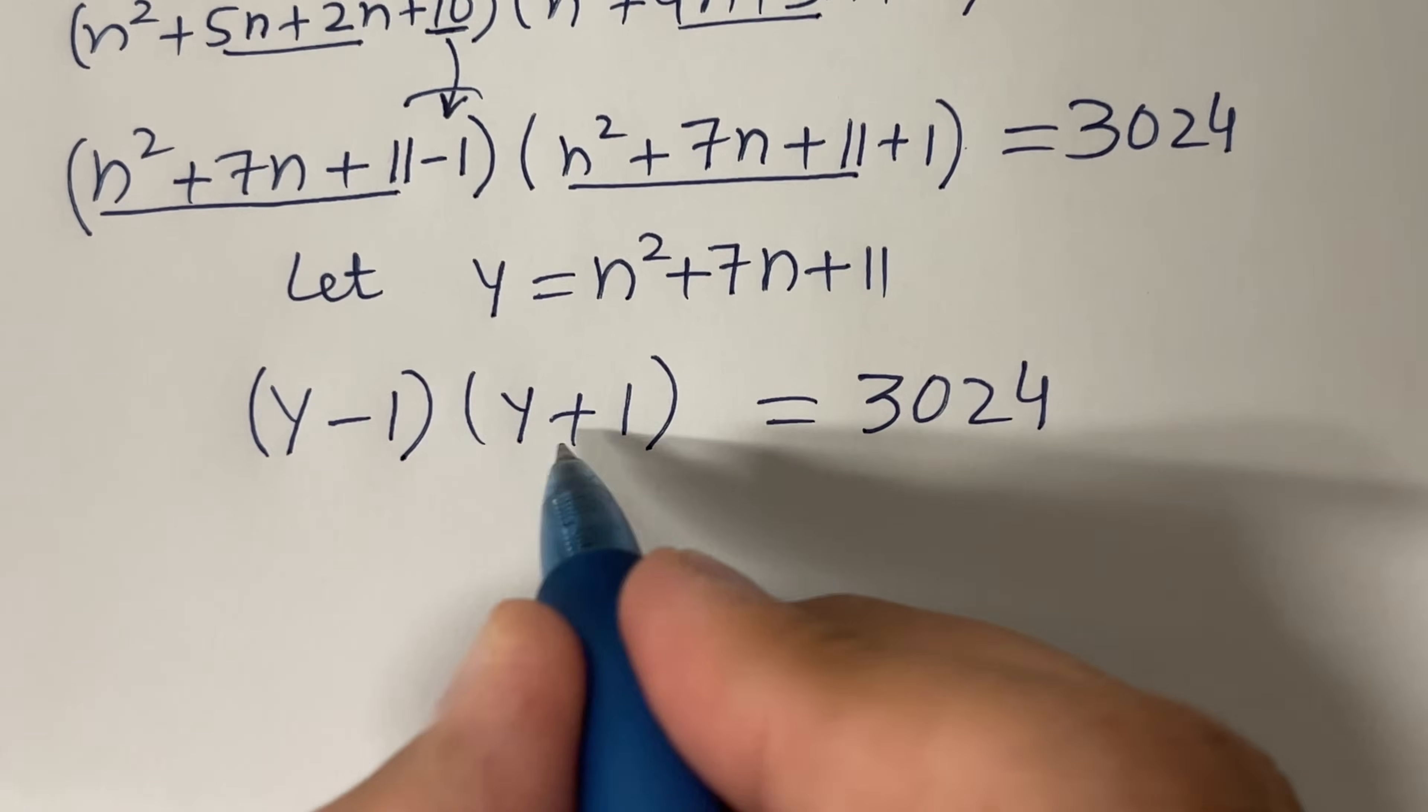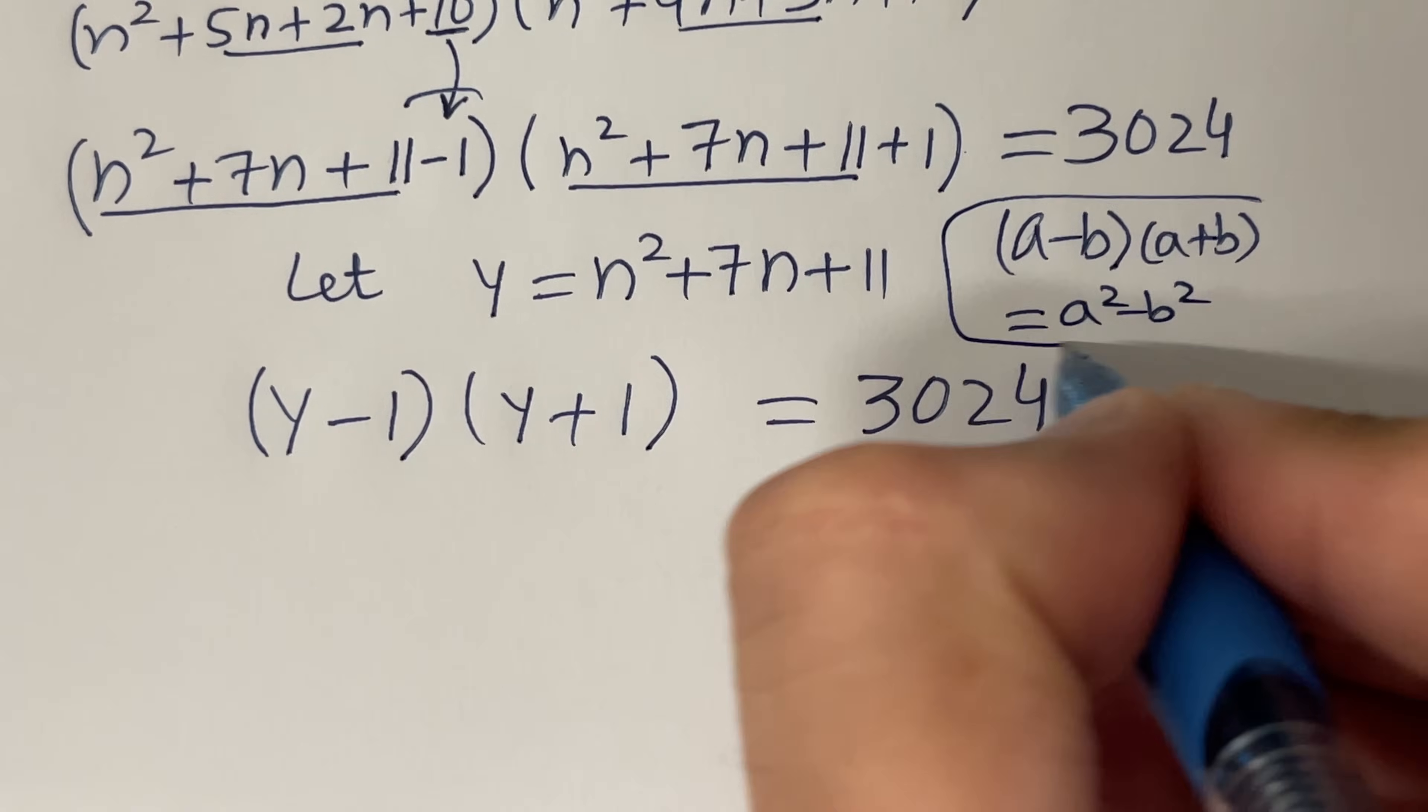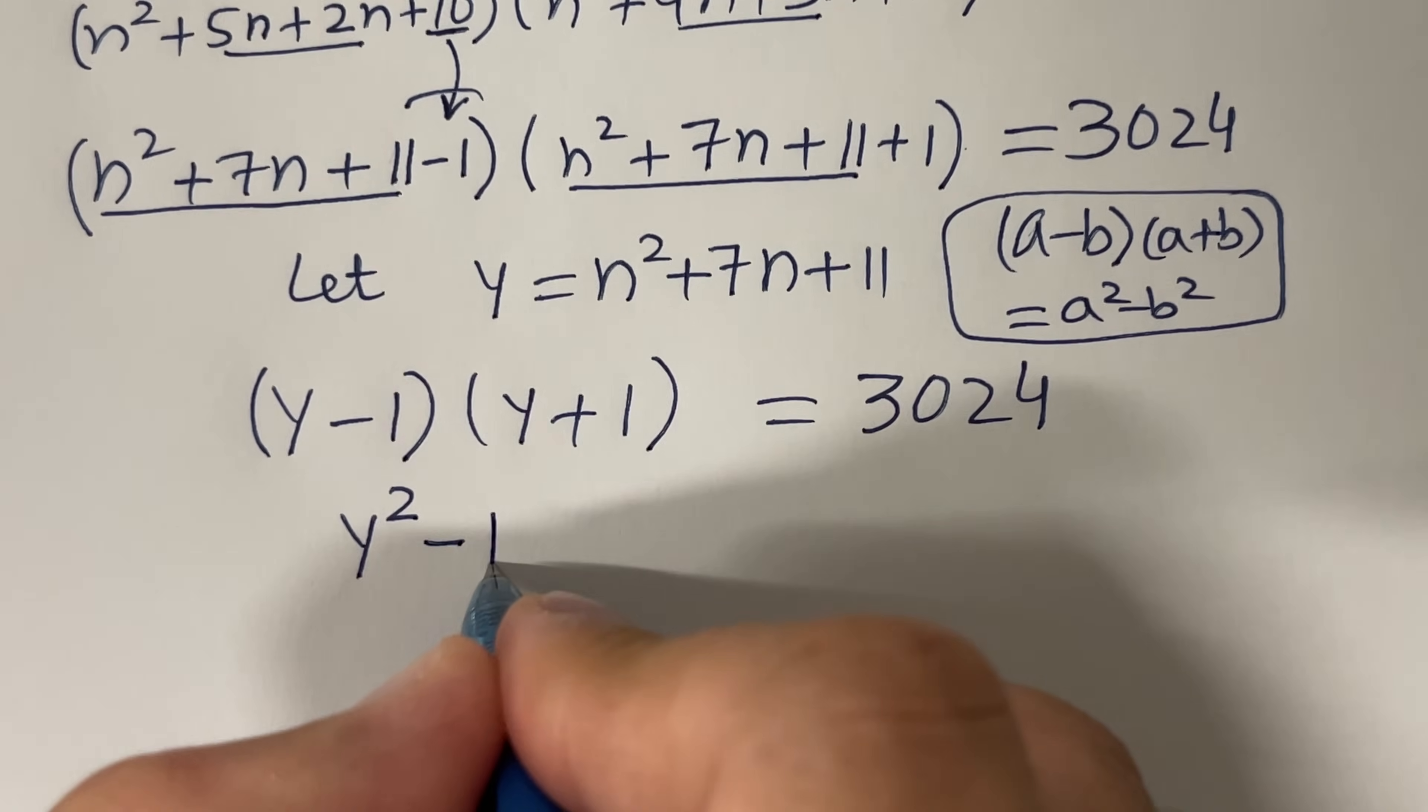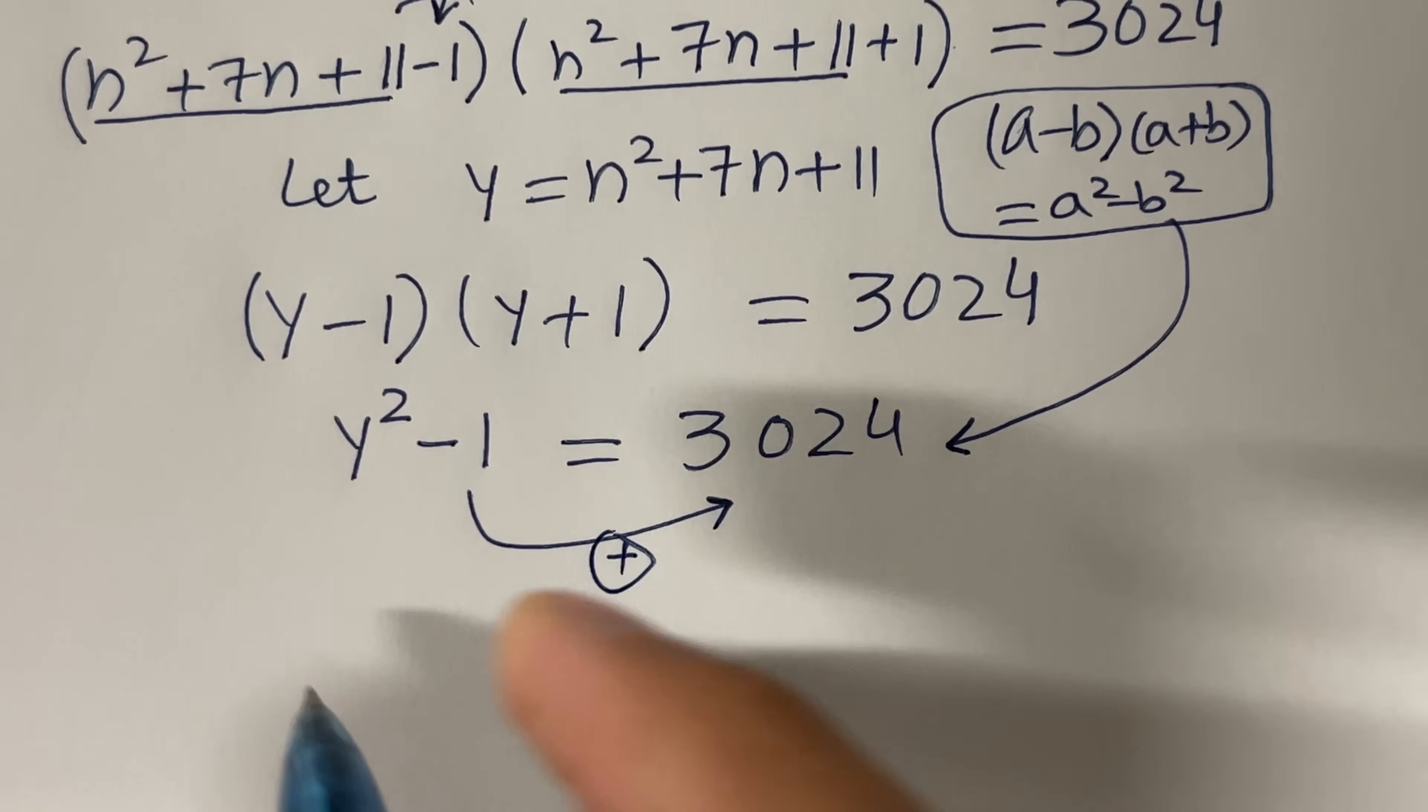Now if you look at here, we have (a-b)(a+b). This formula says (a-b)(a+b) is equal to a² - b². We have a as y and b as 1, so we will have a² which is y² minus b². B is 1, so 1² is just 1. Therefore, we have this guy by using this formula here.